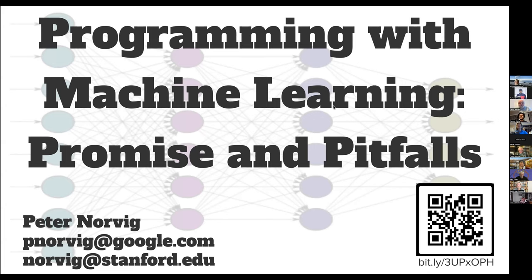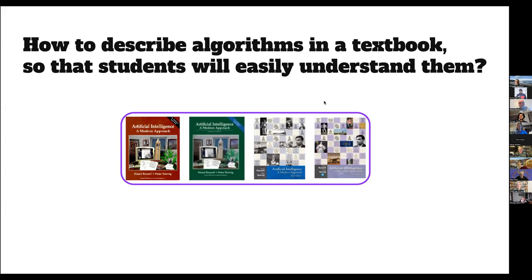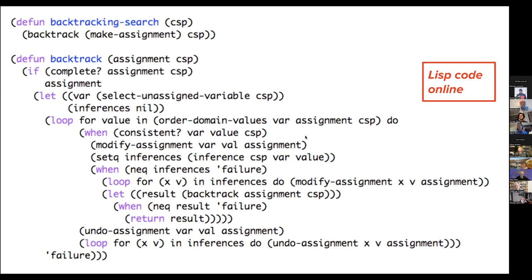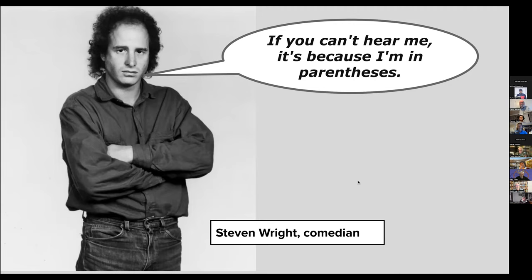I want to talk about programming with machine learning. One of the problems I faced years ago is how to describe algorithms in a textbook so that students will easily understand them. I didn't want to dictate to the instructor what they should do, so I came up with my own pseudocode. I implemented it in Lisp, since this was an AI book in the 90s and Lisp was the language of AI. But students complained they couldn't see the correspondence between the Lisp and the pseudocode — even though there was practically a one-to-one correspondence. I felt like this Steve Wright joke: if you can't hear me, it's because I'm in parentheses.